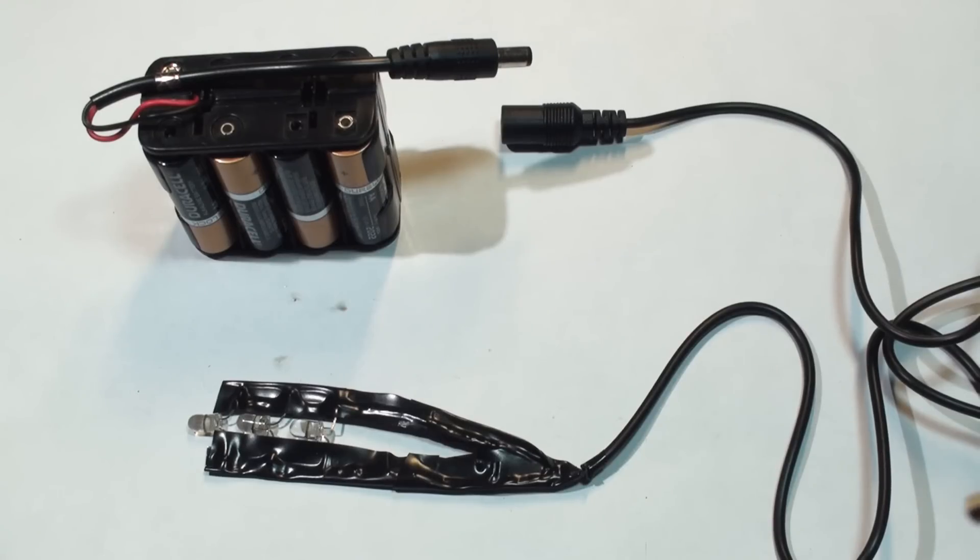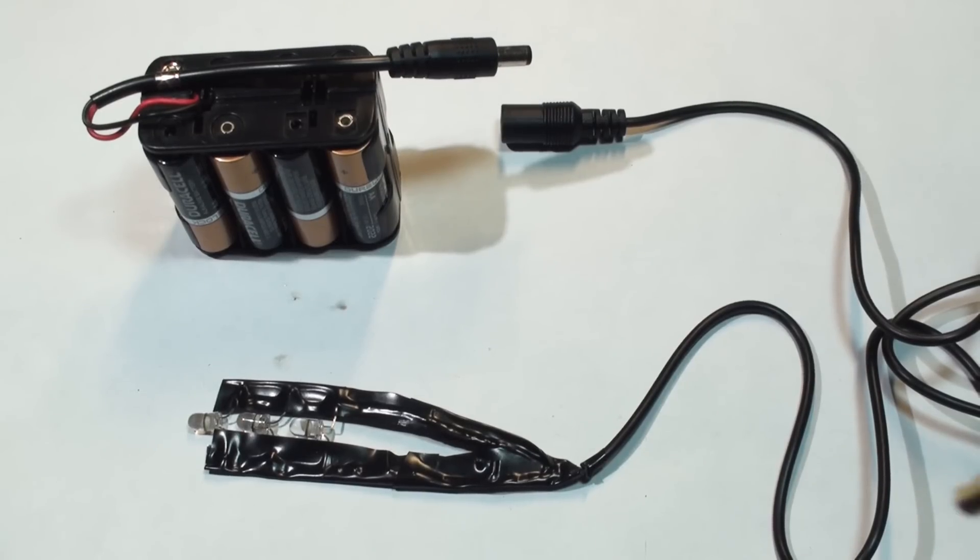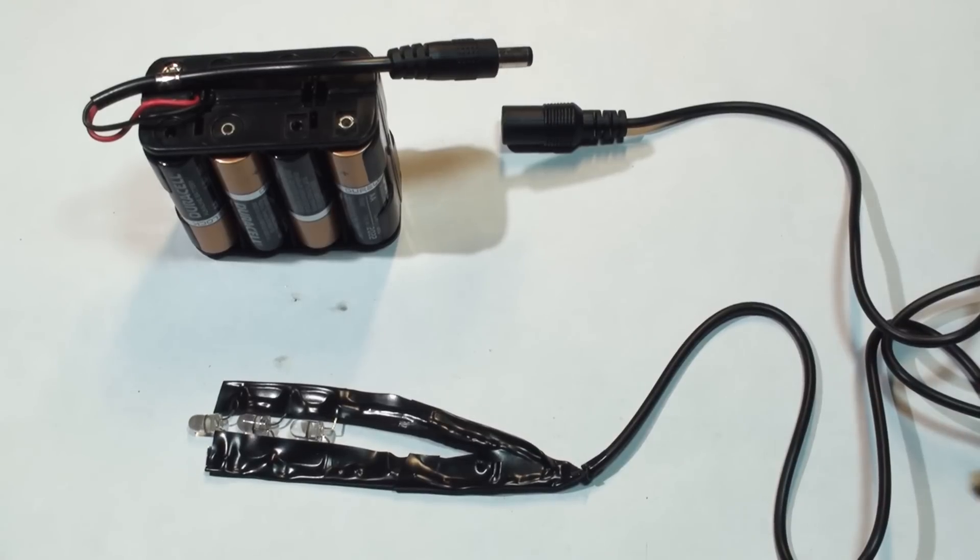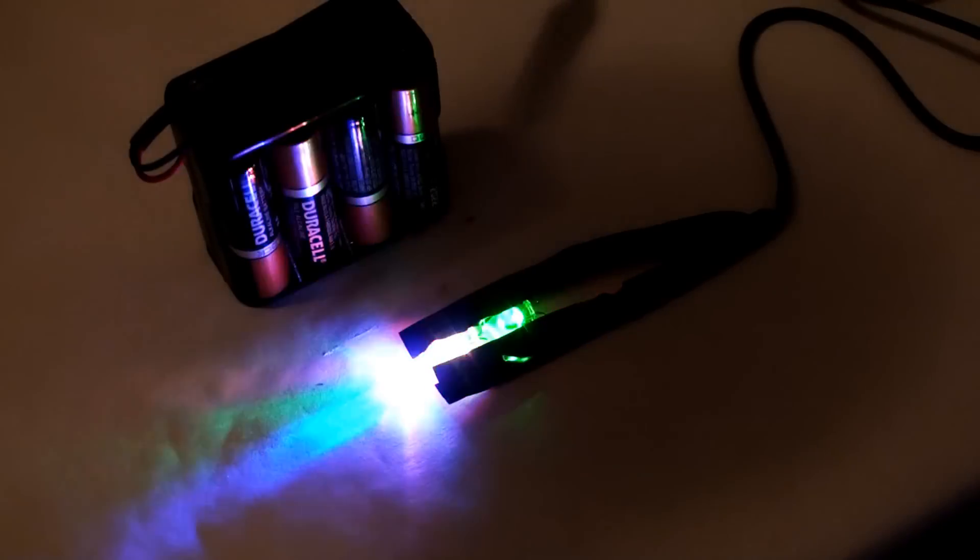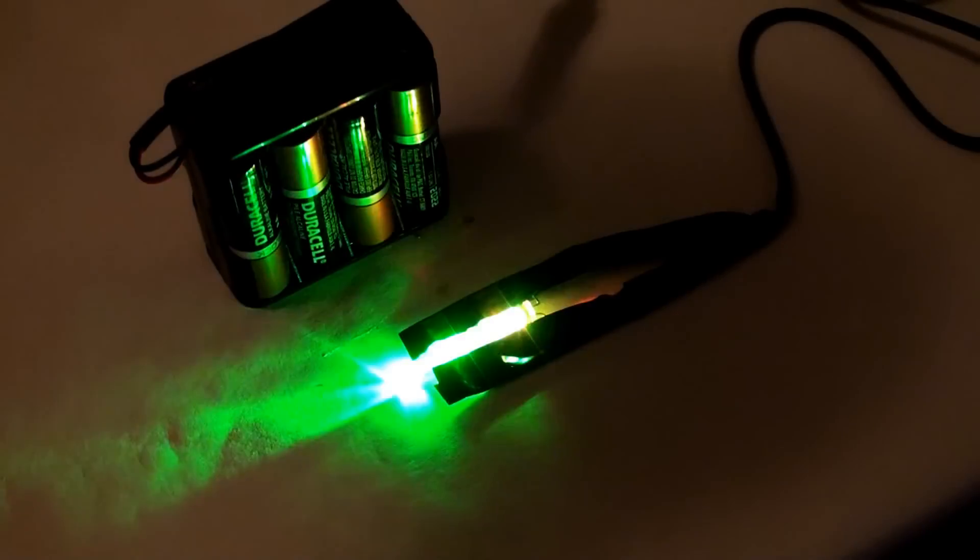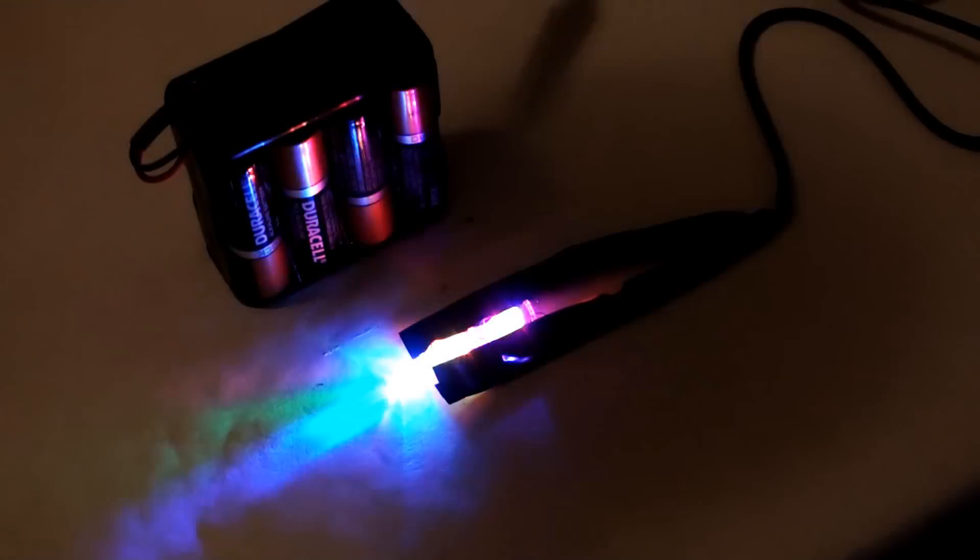Here I went ahead and covered up all the exposed wire with electrical tape, and we are basically done. All we need to do is put batteries in our battery power supply, connect it in, and see if it works. That concludes my video on how to wire multiple LEDs in a parallel circuit. I'd like to thank you all for watching. Please comment, rate, and subscribe for more upcoming videos. Thank you.